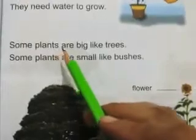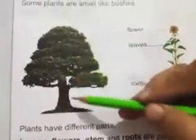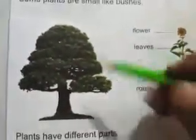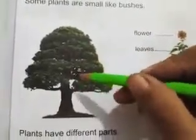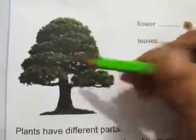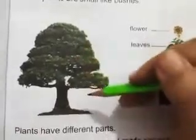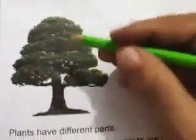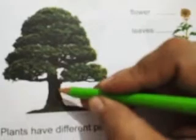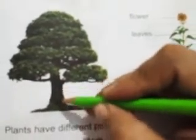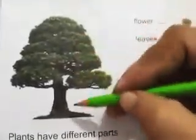Some plants are big like trees. We have lots of trees around us. When you go out, you can see neem tree, banyan tree, mango tree, jamun tree, and eucalyptus tree. Trees are very big and strong; they have a solid trunk — a very big solid trunk.